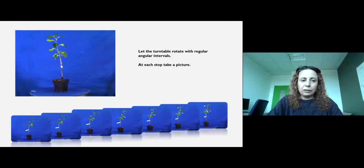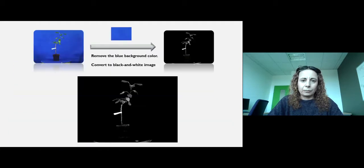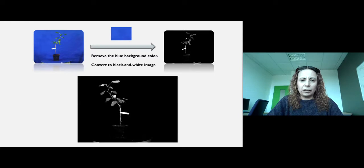We place the plant on the turntable and let it rotate with regular angular intervals. At each stop, we take a picture of the plant. Then we remove the blue background colors and convert the image to black and white.